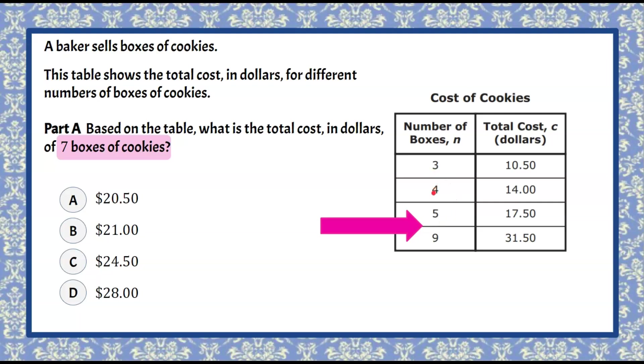So we go adding one box, adding one box, and then all of a sudden this table of values jumps four boxes. Now we have the total cost here so let's look at the relationship that exists in this table. When we go from three to four we're increasing by one and then when we go from $10.50 to $14 that's an increase of three dollars and fifty cents. So we bought an additional box and it cost us an additional three dollars and fifty cents.